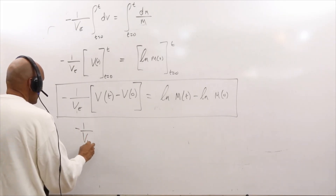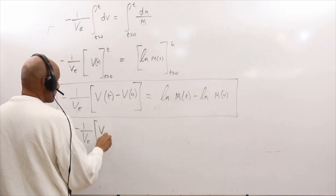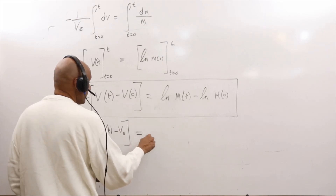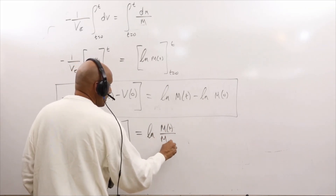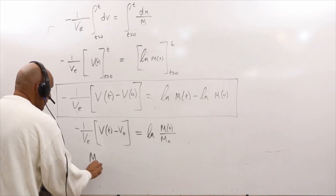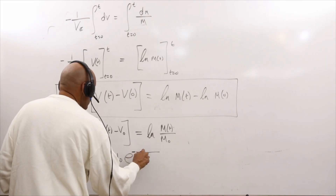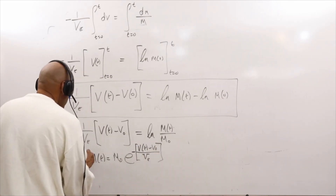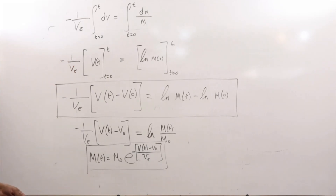Rewriting: minus VE times (v(t) minus v₀) equals the logarithm of m(t) over m₀. Taking the exponential on both sides, we arrive at: m(t) equals m₀ times the exponential of minus (v(t) minus v₀) divided by the exhaust velocity VE. This equation is the rocket equation — the solution of the first order differential equation.